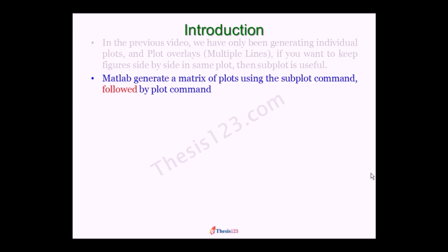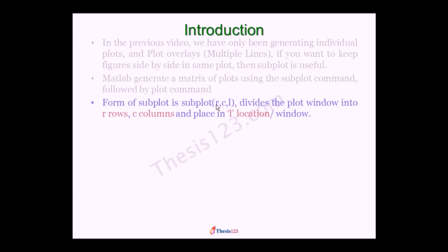Whenever you use subplot, you follow it with a plot command or some text command. The form of subplot is subplot(r, c, l). That means r is the number of rows, c is the number of columns, and l is the location or the window. So whenever you use subplot, the figure window is divided into r by c, and l gives the location of each plot.